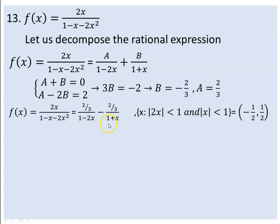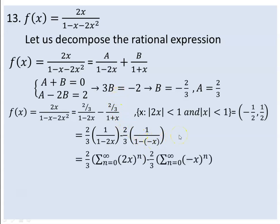Now, 2/3 times 1 over 1 minus 2x minus 2/3 times 1 over 1 minus minus x. One over 1 minus 2x is the summation of 2x to the power of n. One over 1 minus minus x is the summation of minus x to the power of n, which is the summation of 2 to the power of n times x to the power of n.